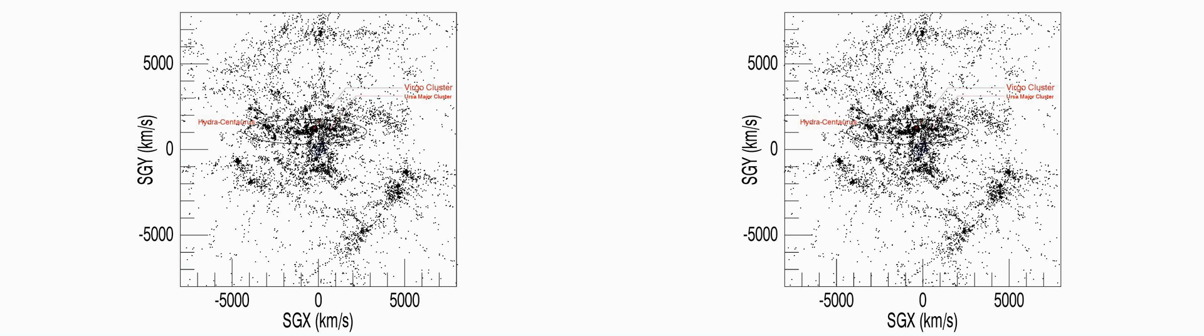Other prominent features include the Fornax cluster region, Perseus species, and the Southern Wall, Pavo Indus, and a slice through the Great Wall.